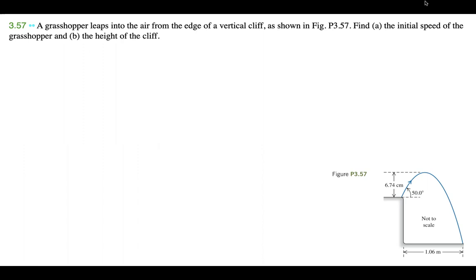A grasshopper leaps into the air from the edge of a vertical cliff, as shown in figure P3.57. Find A, the initial speed of the grasshopper, and B, the height of the cliff. Usually I like to start off with a diagram to explain and draw out the problem, but this question is a little different in that we're not really given any information in the question itself — all the information is given in the diagram, which I've included right over here.